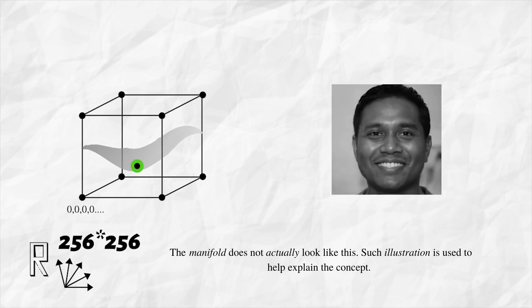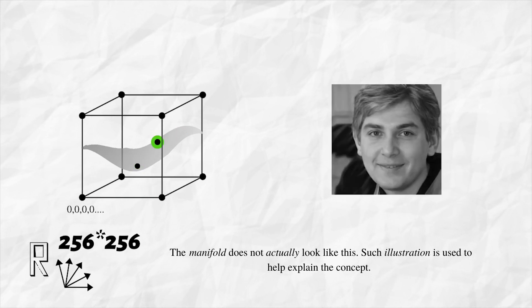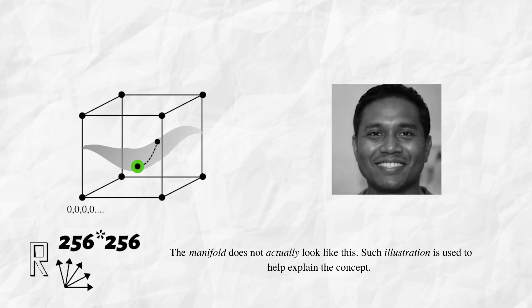Every point on or near this manifold is a face. For example, this point here is this face and this point is this face. If we travel between these points while remaining on the face manifold, we would have a smooth transition between the faces.